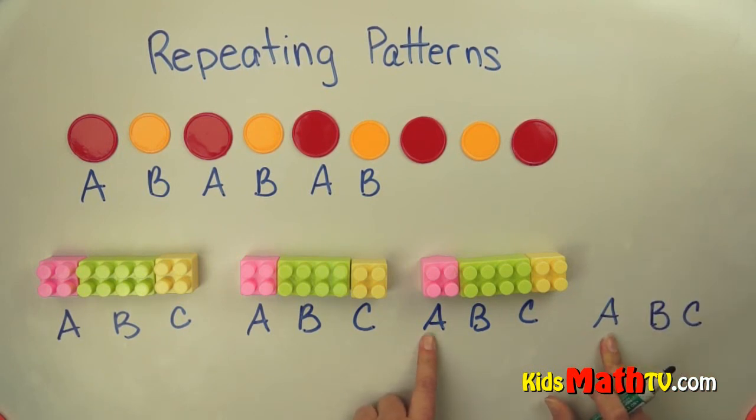Where A would be the pink, B would be the green, and C would be the yellow. And that's the end of our lesson on repeating patterns.